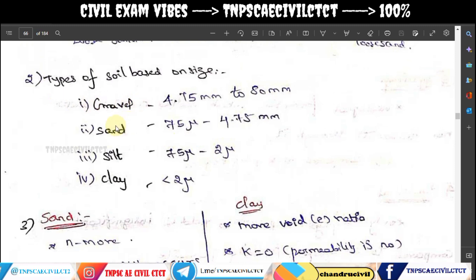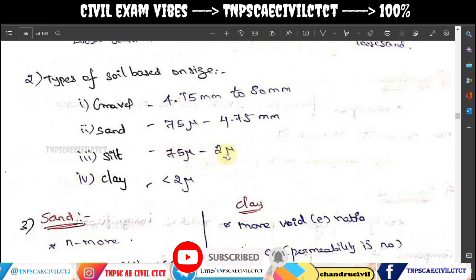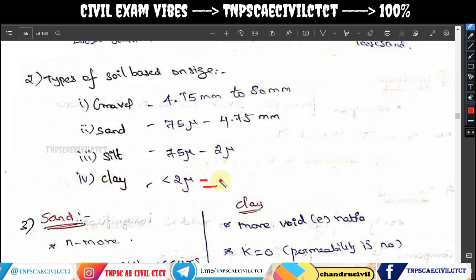Now let's talk about gravel and particle size ranges. Gravel is 4.75 mm up to 80 mm. Sand ranges from a highest of 4.75 mm down to a lowest of 75 micron. Silt ranges from 75 micron down to 0.002 mm. Clay is less than 0.002 mm. So: clay < 0.002 mm; 0.002–75 micron is silt; 75 micron–4.75 mm is sand; 4.75–80 mm is gravel.